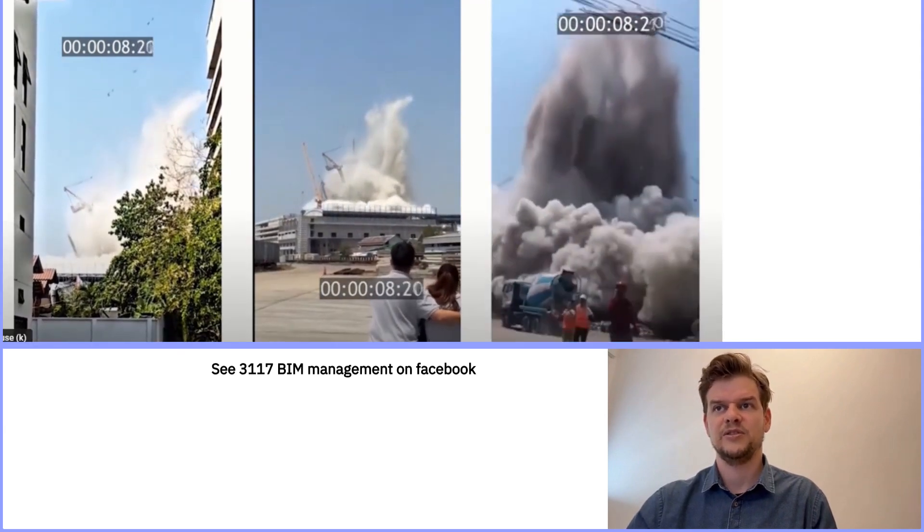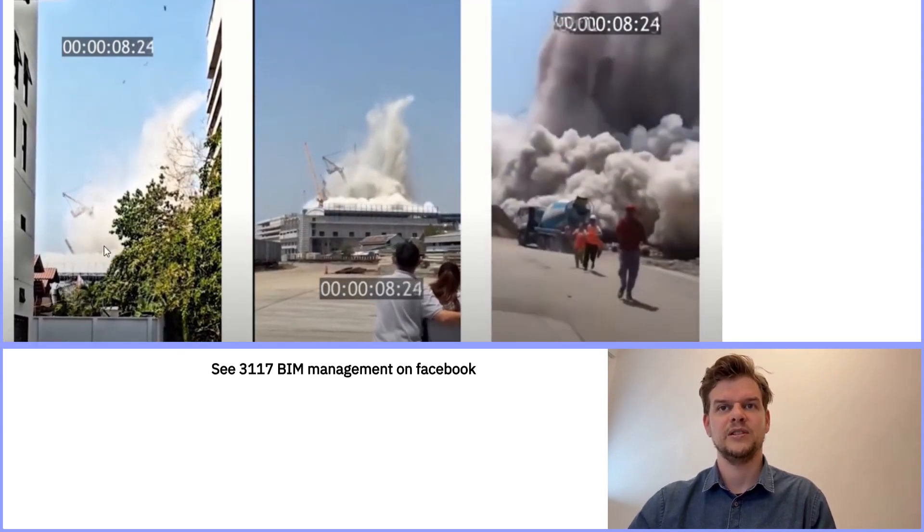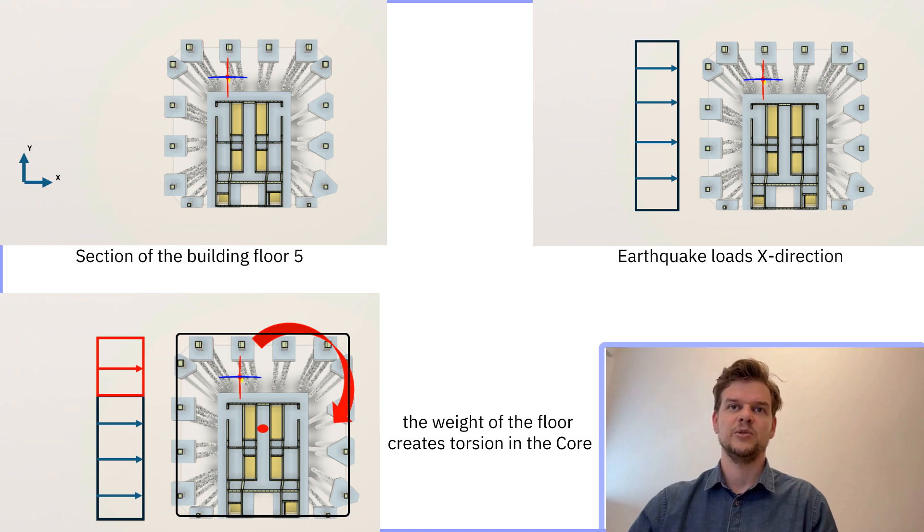Floor after floor collapses on the one below until there's nothing left. Torsion is a twisting motion around a building's vertical axis. During an earthquake, the ground moves, but the building's mass responds with a delay. That creates internal twisting forces.